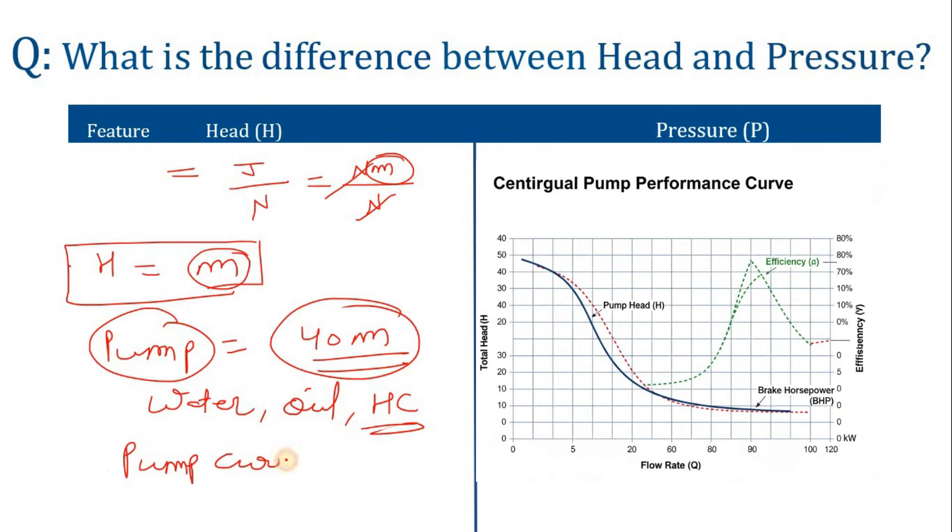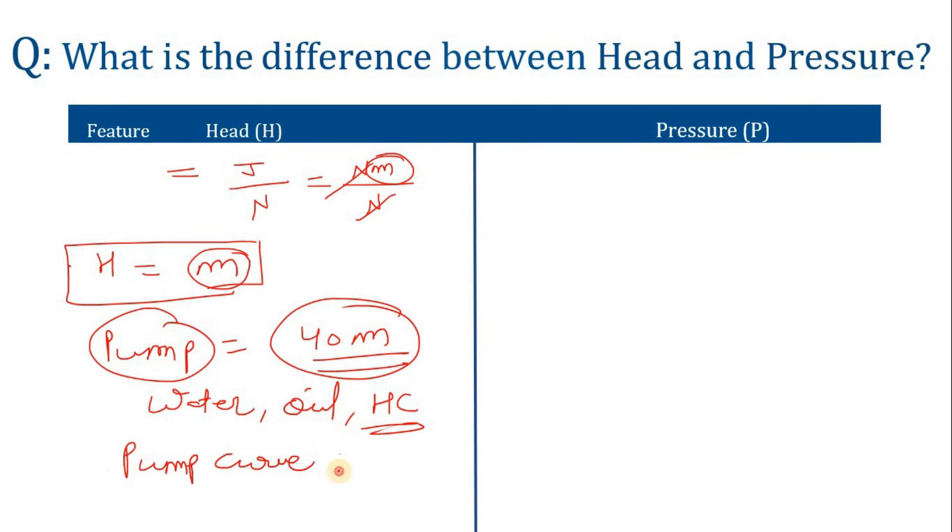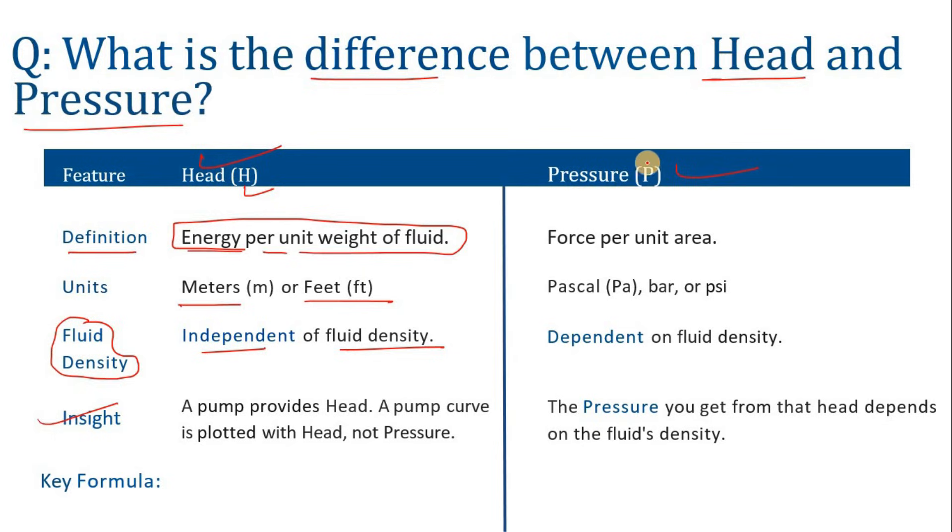Now let's see what is pressure. Pressure is denoted by P. That is force per unit area. So what is the unit of force? That is newton. And the unit of area is meter square, so it is newton per meter square, and the SI unit is pascal.